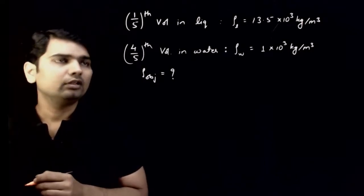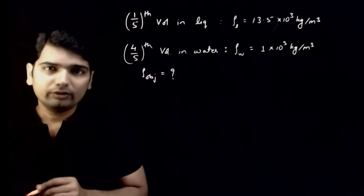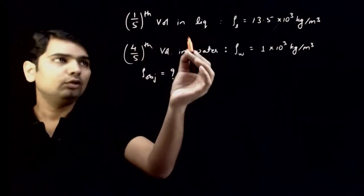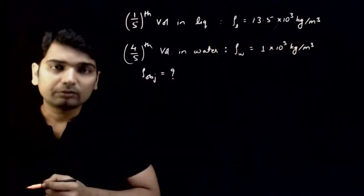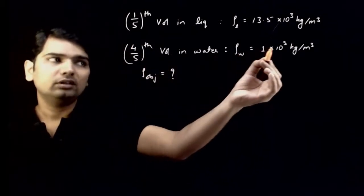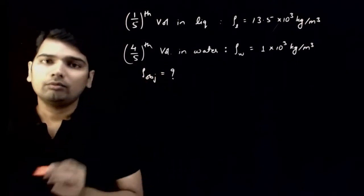In this problem, we are given that an object is floating in two liquids. One-fifth of the volume is in the liquid of density 13.5 × 10³ kg per meter cube, and the remaining four-fifths volume is in water of density 10³ kg per meter cube. Density of the object is asked.